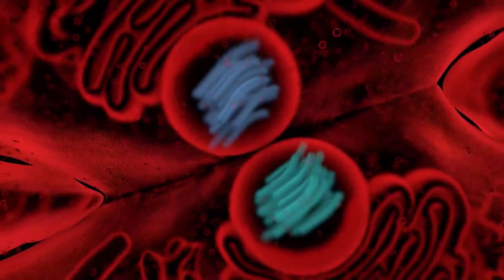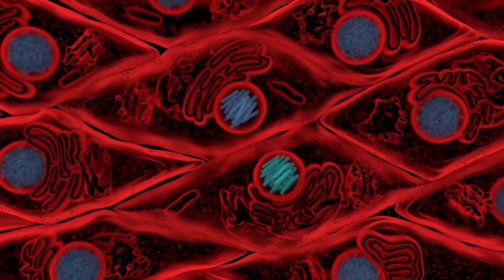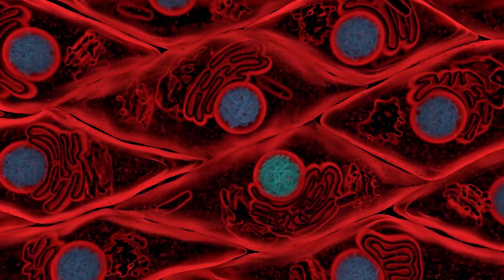As the cell divides, condensed chromosomes keep DNA organized and untangled. After cell division, the chromosomes return to their relaxed state. This way, their genes are more accessible.